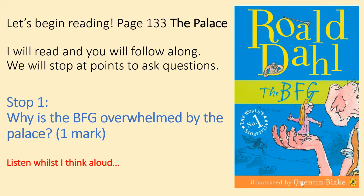I want us to get our books and open up to page 133. This chapter is called The Palace. Have a little think about what this chapter might be about. Sophie and the BFG are going to go and find the Queen in London — they've just arrived in the Queen's back garden. I'm going to read and I want you to follow along; we'll stop at points to ask questions along the way.